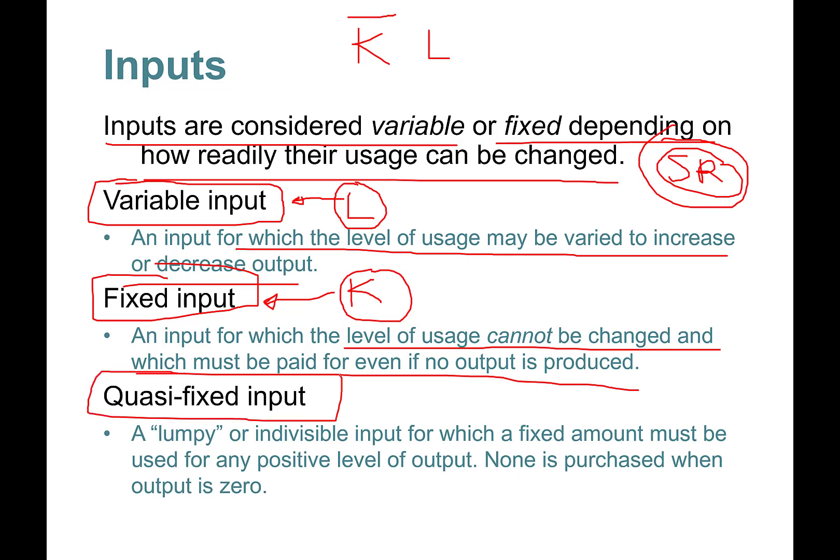There is also something called quasi-fixed input. This is a lumpy or indivisible input for which a fixed amount must be used for any positive level of output. None is purchased when output is zero. This is something you have to pay fixed, but after you have production.